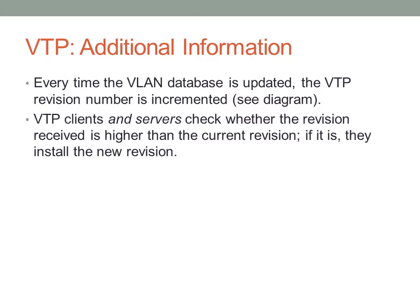VTP clients and servers all check whether the version they receive is higher than the currently installed version. This can cause problems with VTP migrations. For example, suppose a switch has a VLAN database with revision 15 and you plug it into a brand new network freshly configured with VTP at revision 3. If VTP is configured the same on all devices, that old VLAN database at revision 15 will overwrite the newer VLAN databases on the newly configured switches simply because the revision is higher — the revision is all that matters. There are ways to configure the VTP revision number on the switch, which we may cover in the next module.